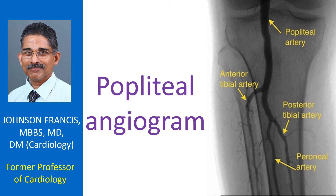Popliteal angiogram is usually obtained as part of the femoral angiogram by panning the table downwards to cover the popliteal artery as the contrast flows down from the femoral artery. Femoral angiogram can be obtained either by an antegrade puncture of the ipsilateral femoral artery and introducing the sheath downwards in an antegrade fashion, or by a catheter introduced through a conventional retrograde puncture of the contralateral femoral artery.